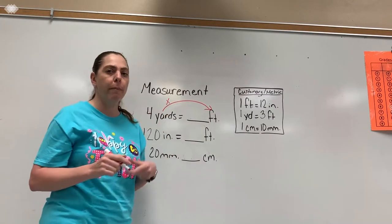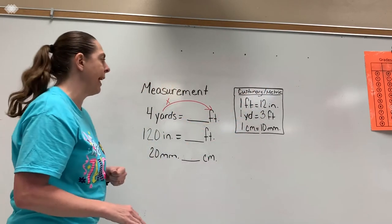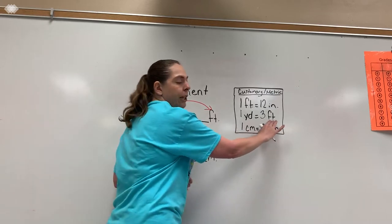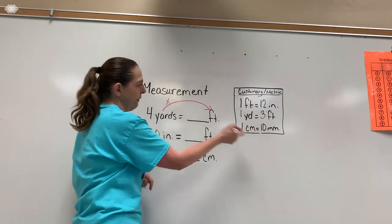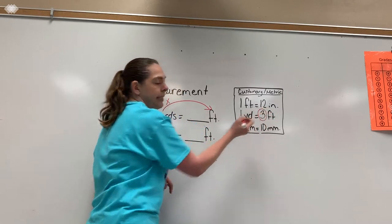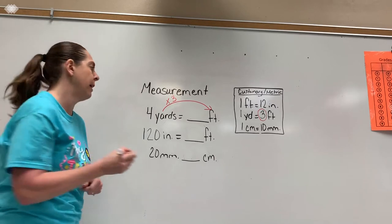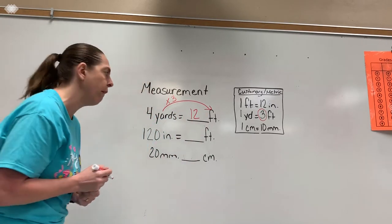So my next question is, what do I multiply by? So I come over here to my reference information and I look for the one that has yards and feet together. So I look here, here's my yards and feet and the number that's not a one, which I'm trying to get to feet. So that's the number I go to is a three. So I multiply by three, four times three is 12. So I know that four yards is equal to 12 feet.